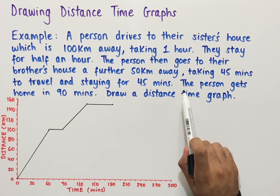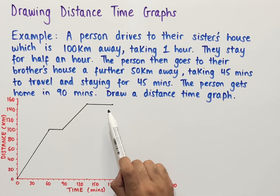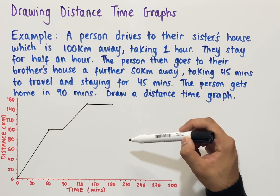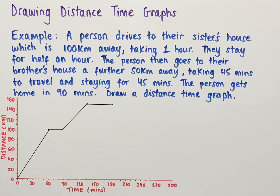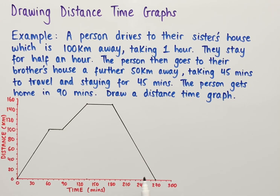The final sentence says the person gets home in 90 minutes. They're 150 kilometers from home and will travel the full distance back, ending on the x-axis which represents 0 kilometers from home. Adding 90 minutes to 180 minutes gives us 270 minutes, so we end at the point (270, 0). Joining these two points gives us the complete distance time graph for this example.